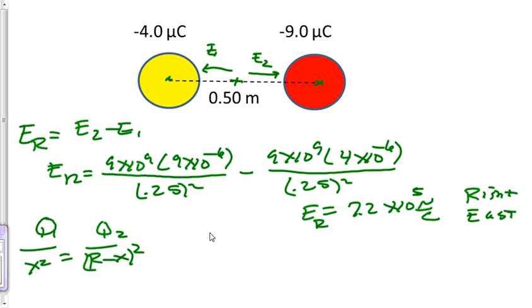So I'm just going to go 4 divided by x squared equals 9 divided by 0.5 minus x squared. Now do not get confused. We used 0.25 above because we were talking halfway between the two. Here we're trying to find the location where electric field is equal to zero. So r stands for the total distance between them.